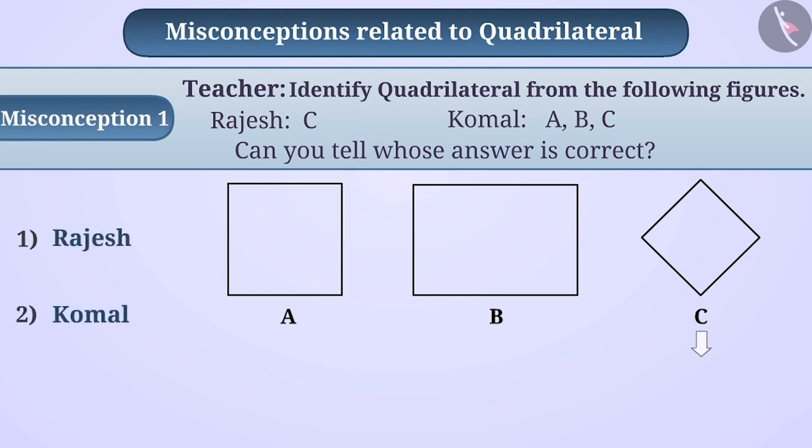Sometimes, figure C is considered to be a quadrilateral. The reason for this is that children are well aware that figure A is called a square and figure B is called a rectangle.